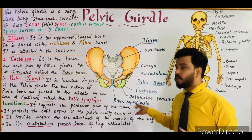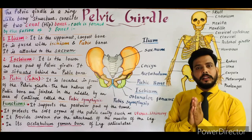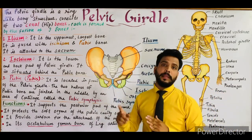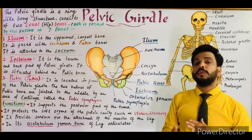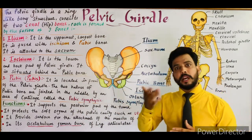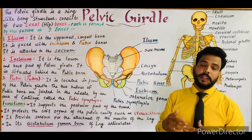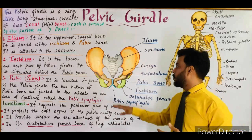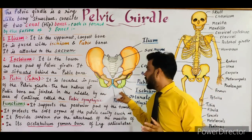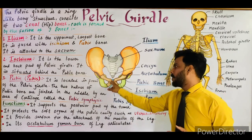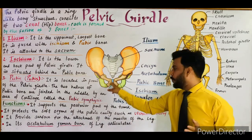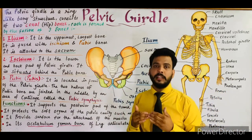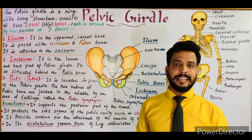The pubic symphysis provides flexibility to the pelvic girdle, allowing easy movement of the legs in any direction. This flexibility is more pronounced in females and helps during childbirth — when the baby comes out from the uterus, the pubic symphysis becomes more flexible and aids in easy delivery. Both pubic bones are attached to each other in front via this cartilaginous structure.